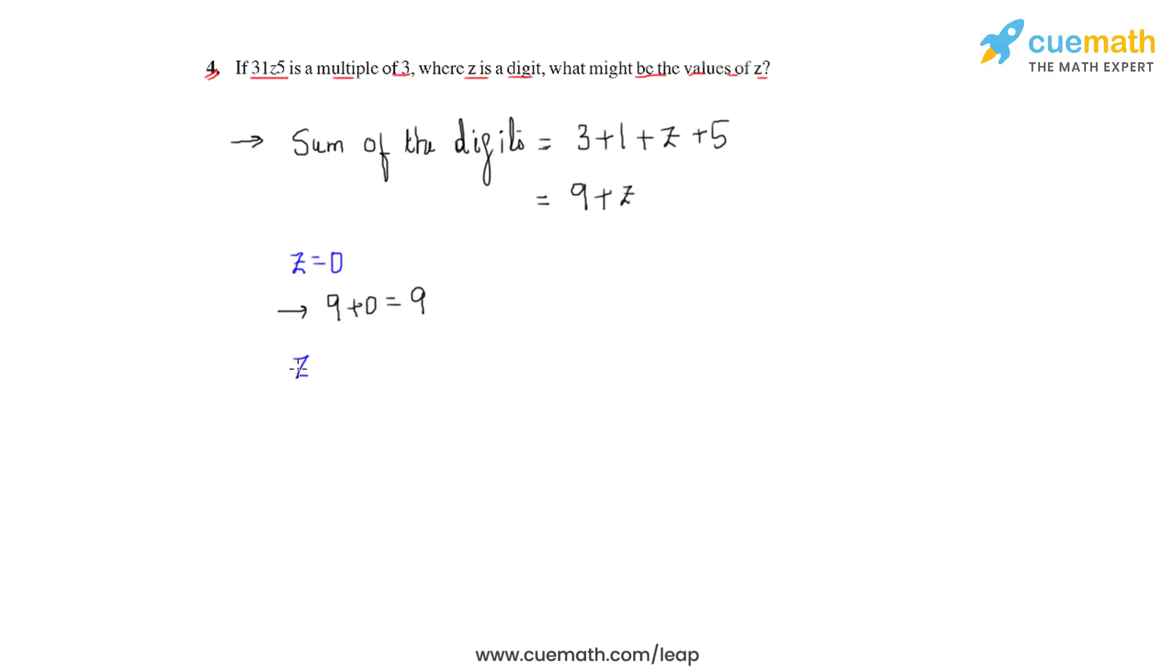Now the next value of z which we are going to consider will have to be 3, because then the sum would be 9 plus 3, that is equal to 12. You see that 12 is again divisible by 3, so the value of z which we have taken is justified.